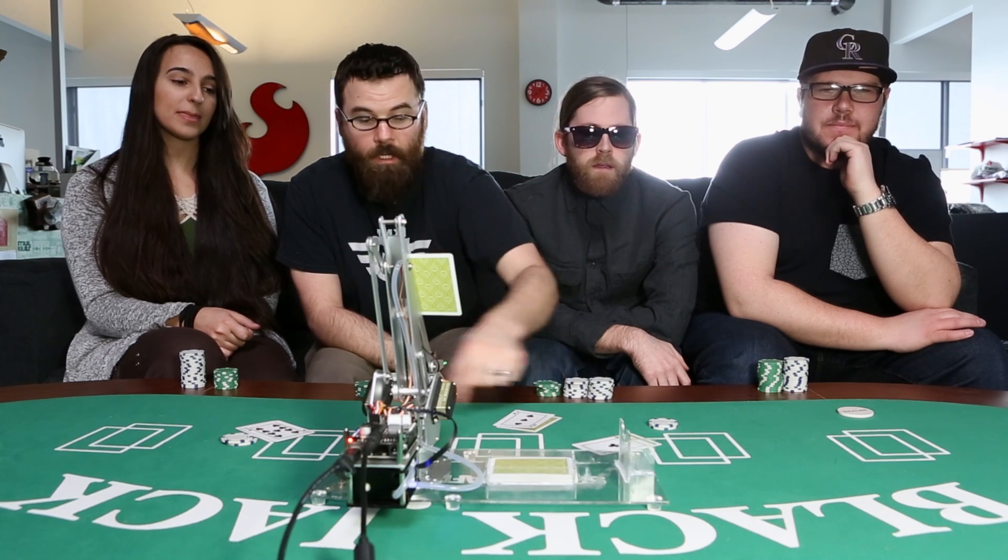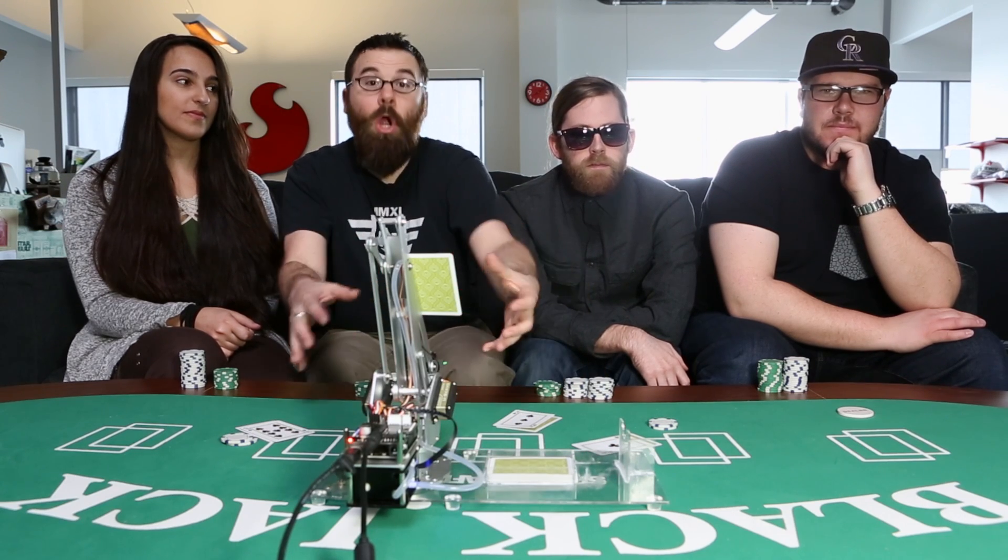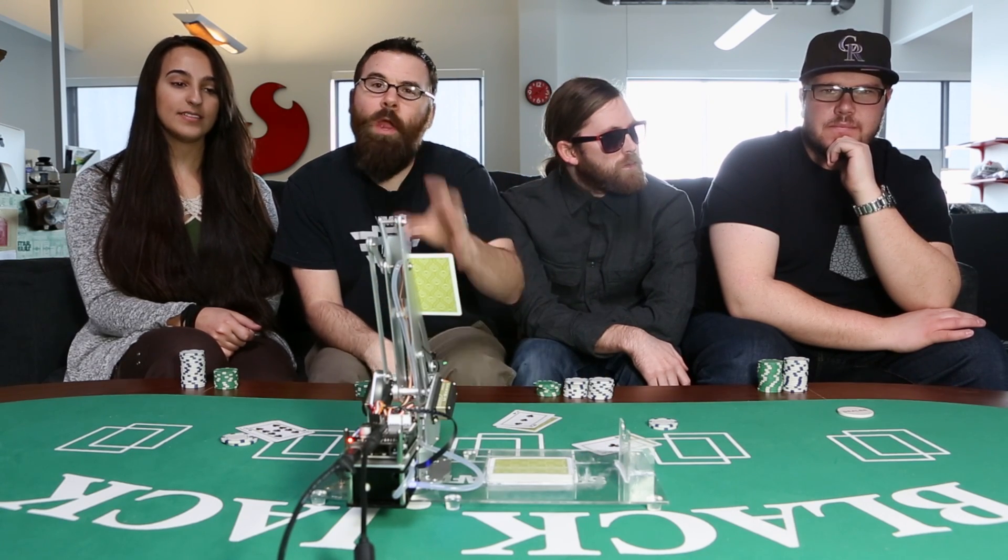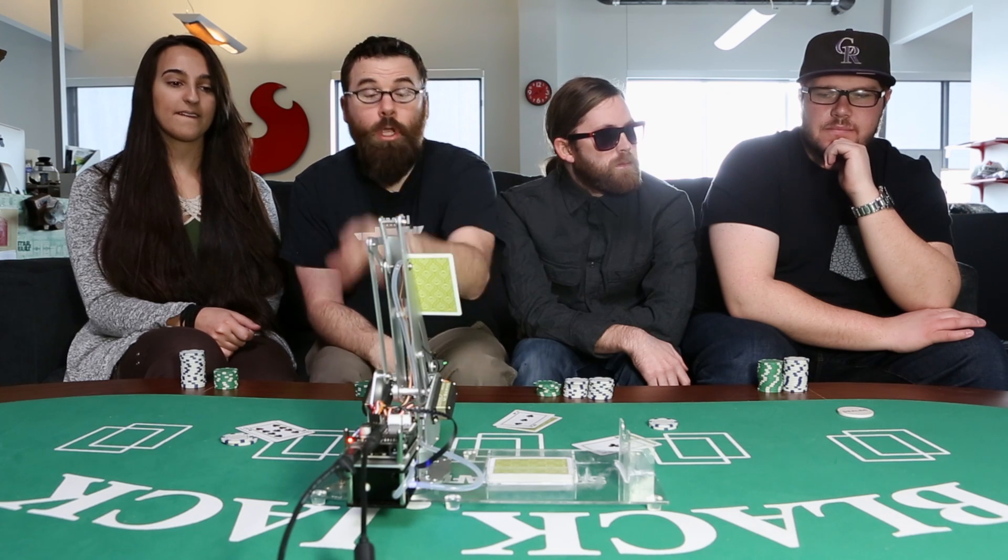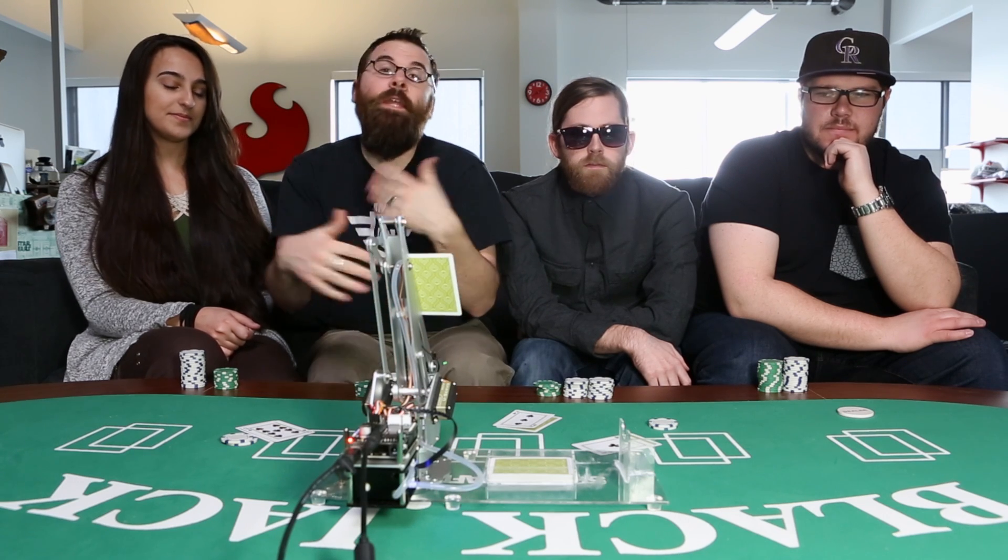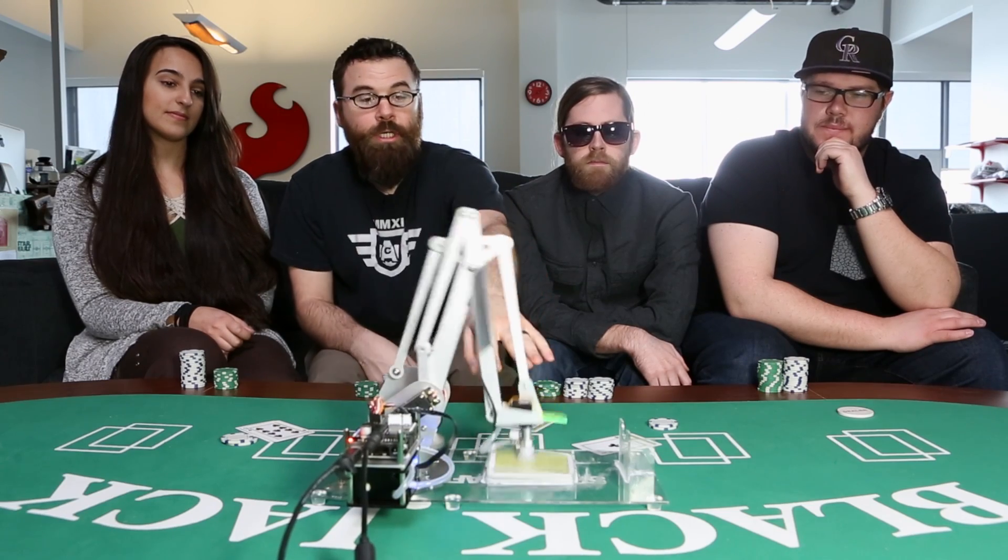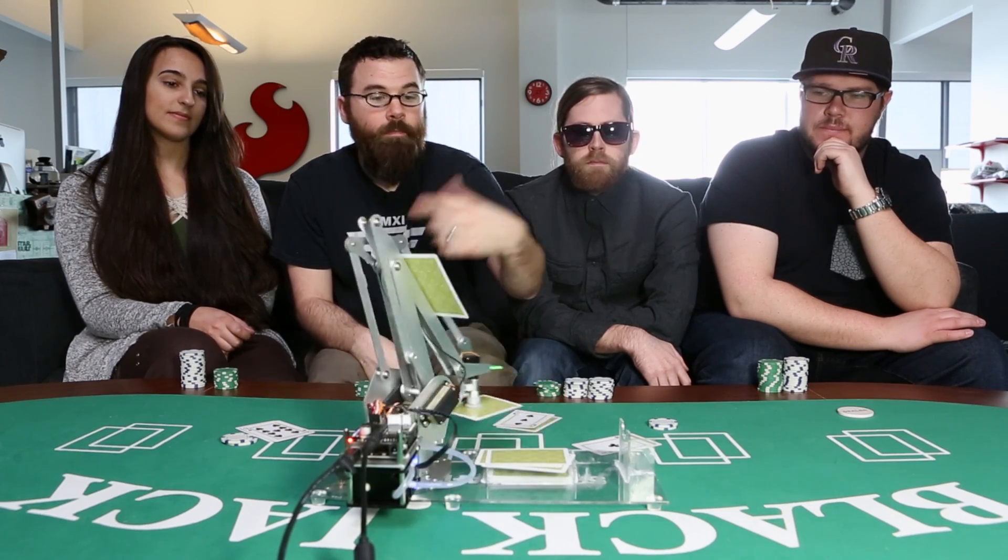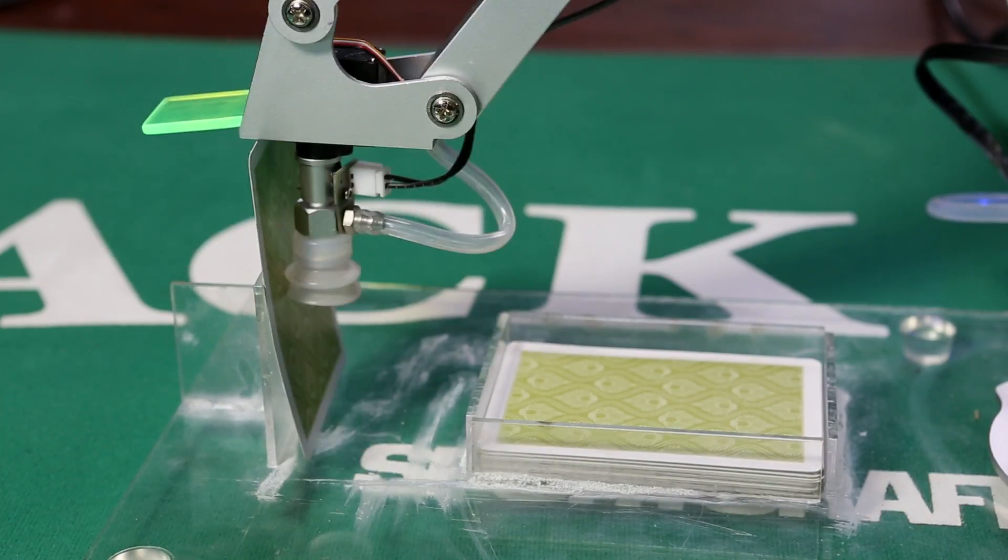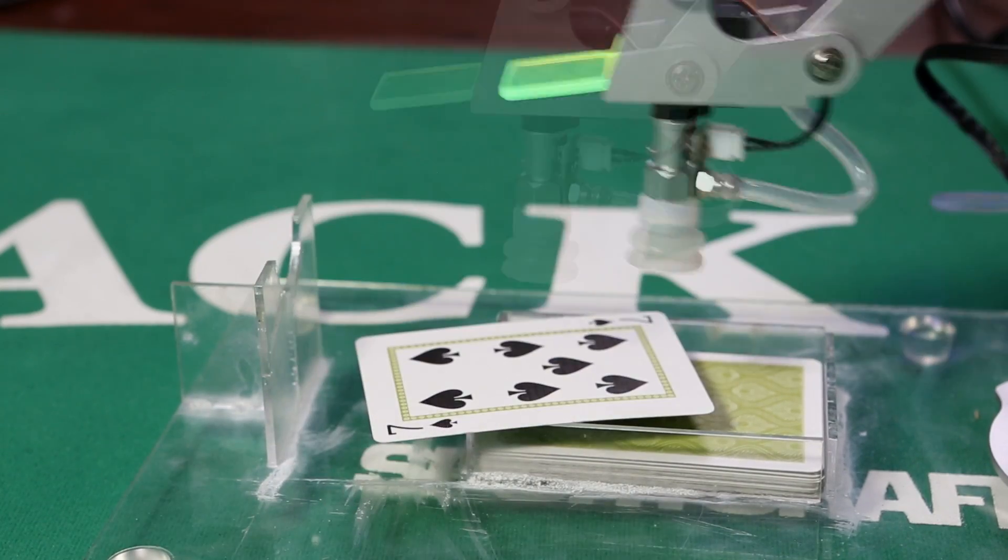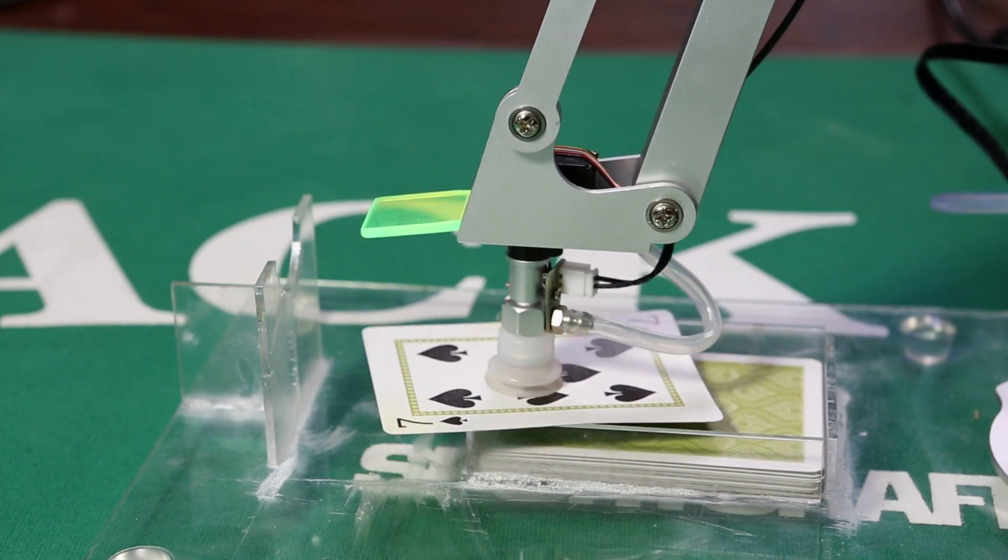We're just taking the coordinates of each one of the people's cards and we're memorizing where those servo positions are for the arm. And then all we do is just basically play that back as a script so that when I say something like 'hit me,' it knows to reach into the cards, grab one, place it there, flip it around, and then put it on my hand.